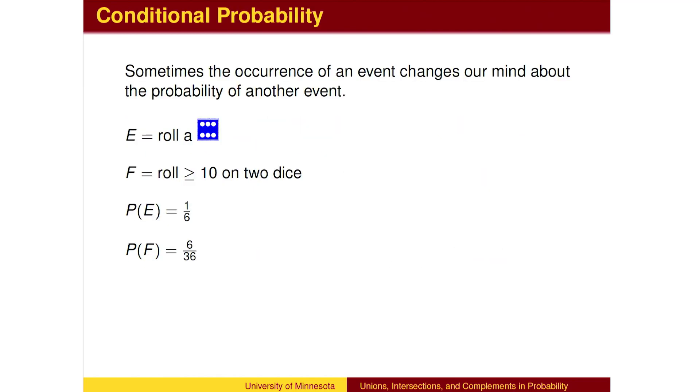One thing that can complicate the situation is when one event influences the probability of another. For example, you are playing a game which you will win if you roll at least 10 on two dice. The probability of that event, event F, is 6 out of 36. There are three ways to roll 10, two ways to roll 11, and one way to roll 12.